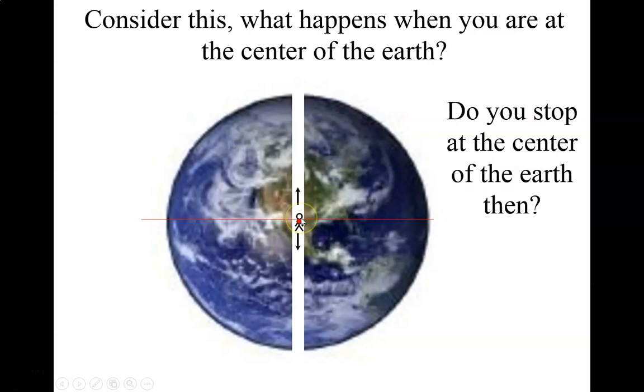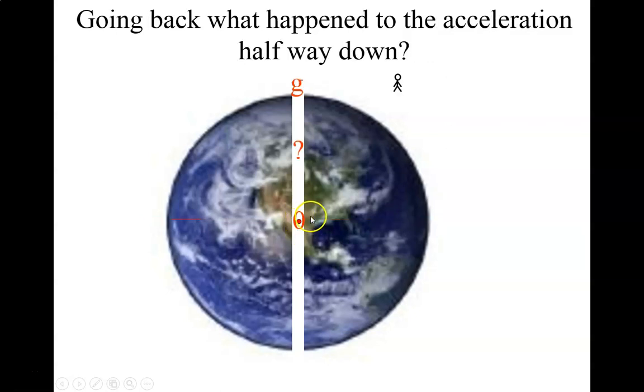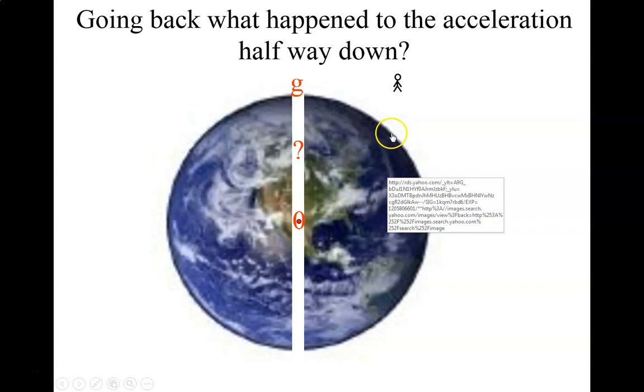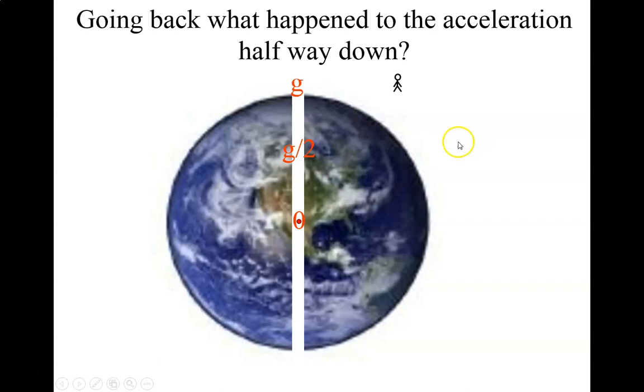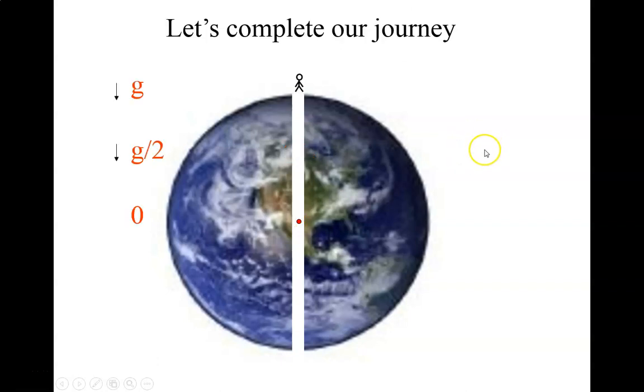Now, if you were falling, would you stop there if the net force was zero on you? No. Remember, you would just stop accelerating. You are already moving and you stop accelerating. That means you're going to transfer to the other side. So going back to the acceleration halfway down, what would the acceleration be halfway down? Well, it's really just G over 2. It's half the acceleration. So we've got G, half G, and then zero, as we said.